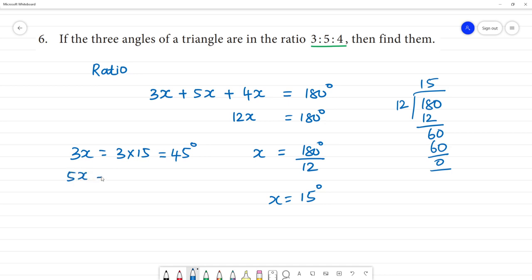Next is 5x, 5 multiplied by 15. That is 5 plus 25, 25 plus 2 is 75 degree.